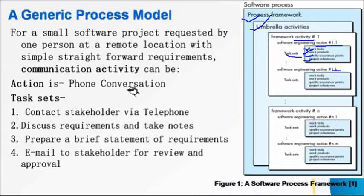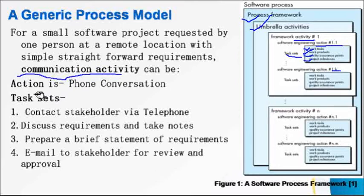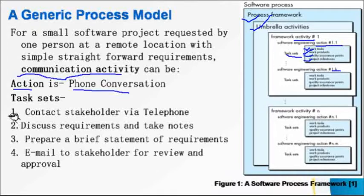To understand this better, consider a small software project requested by one person at a remote location with simple, straightforward requirements. The activity is communication, and the action is a phone conversation. The task sets are: first, contact the stakeholder via telephone since the location is remote; second, discuss the requirements and take notes; third, prepare a brief statement of requirements; and fourth, email it to the stakeholder for review and approval.